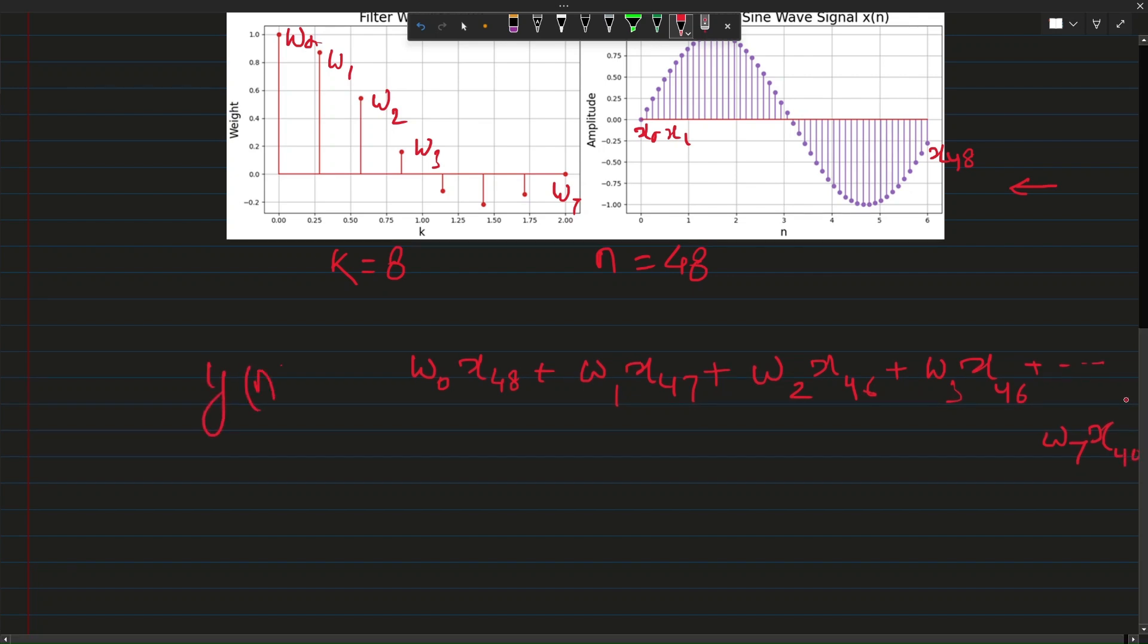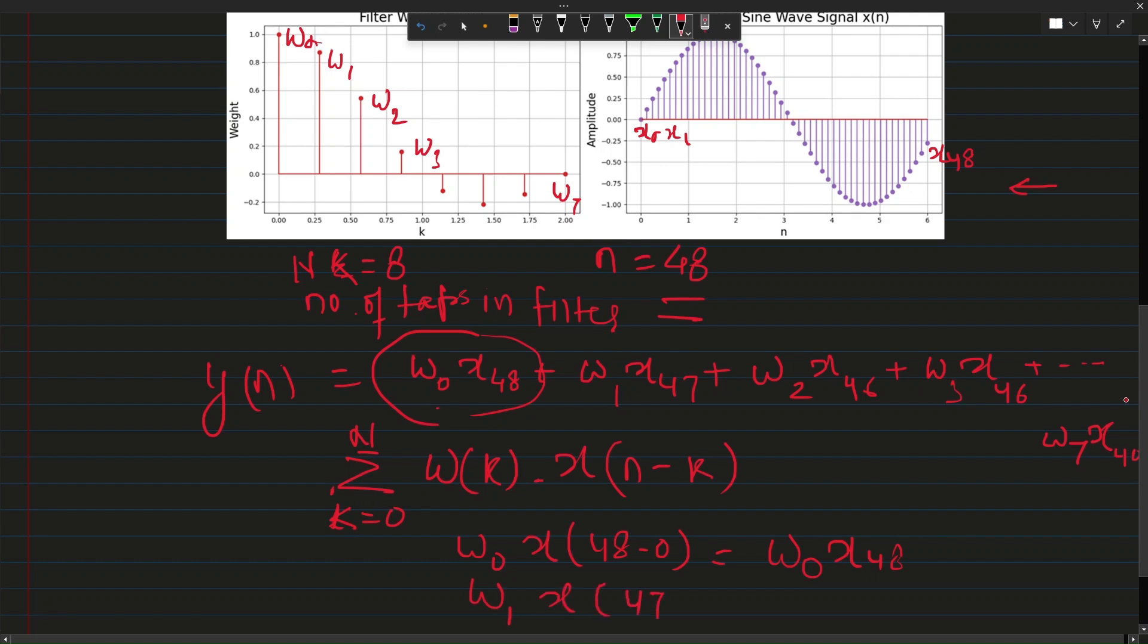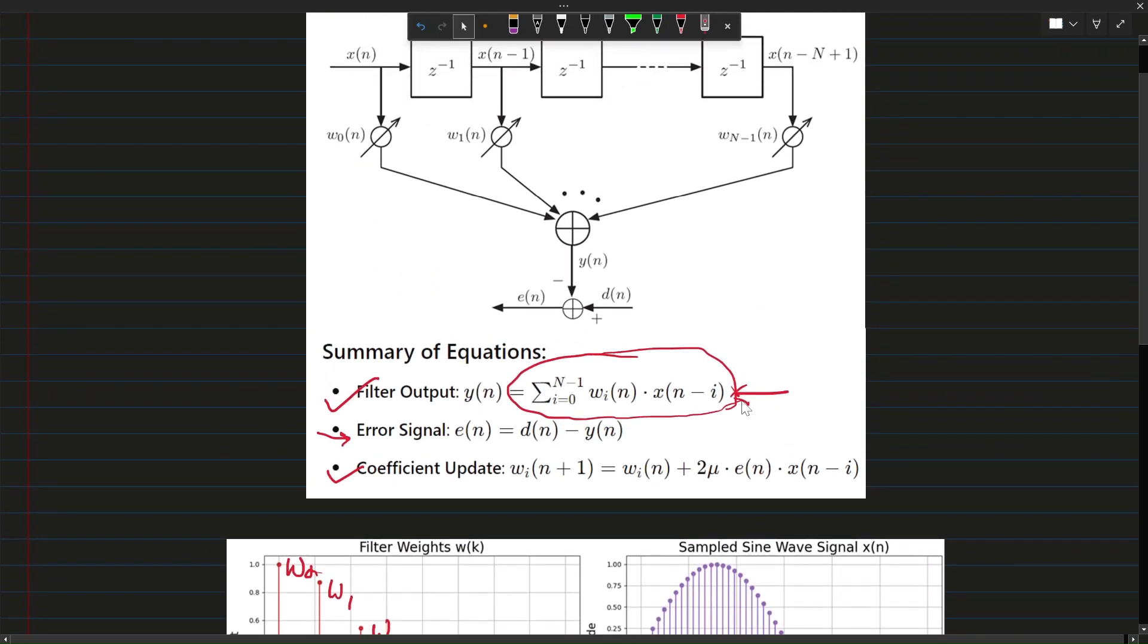This is the first output and this whole process is repeated for all the samples of the signal that is 48. This whole equation can be written as a sum where k goes from 0 to n. N is the number of taps in the filter and we have wk which multiplies by x(n minus k). When k equals 0, we get w0 x48. When k equals 1, this will become 47. This equation is simple, this is implementing convolution as the filter panel slides over the signal.